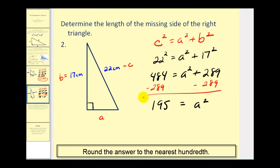And we'll square root both sides of the equation. Again, we're only going to find the principal square root. Now, 195 is not a perfect square, so let's go to our calculator.